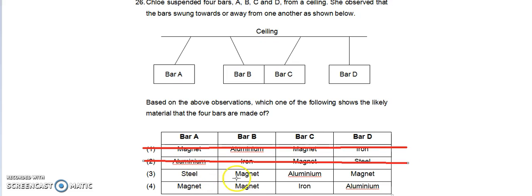Bar A steel, bar B magnet, but bar C aluminum. Bar C is attracted to bar B. So this is also out.